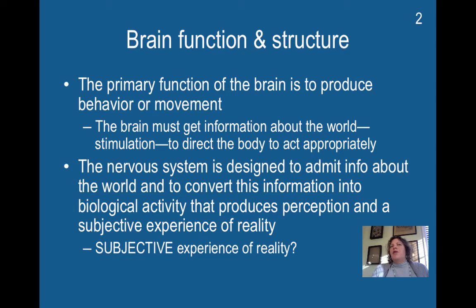In Chapter One we spent a little bit of time going over basics of the brain organization and evolution. Today we're going to be going more in depth about brain structure and function and the organization of the central nervous system and peripheral nervous system.